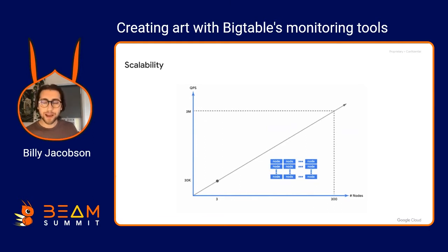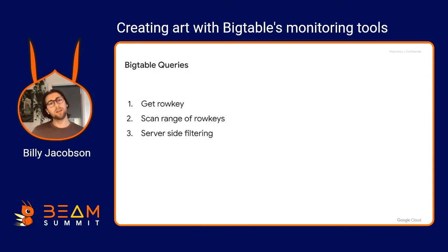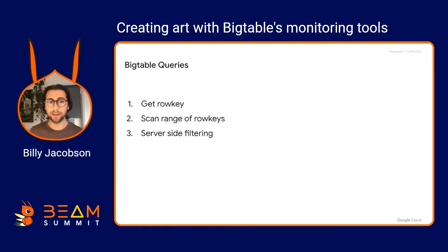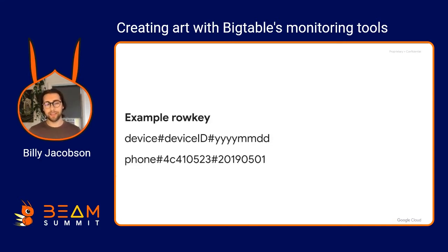To manage the number of nodes you have, you can do that through the user interface or create any auto-scaling scripts that you want. Once you've written some data, the queries you can do on Bigtable are a get based on the row key or a scan on a range of row keys, and there's also some server-side filtering to go along with those.